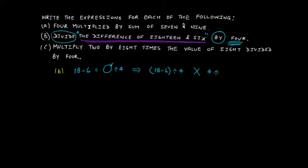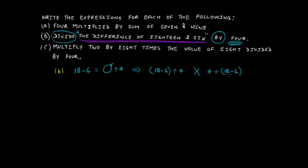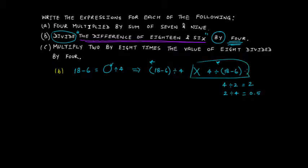Unlike multiplication, you cannot simply interchange the position of numbers in division. For example, 4 divided by 2 gives 2, but 2 divided by 4 gives 0.5 — completely different answers. Also, if you write 18 minus 6 divided by 4 without any bracket, it is unclear which operation to perform first — subtraction or division — just as in statement A. So you must use a bracket.